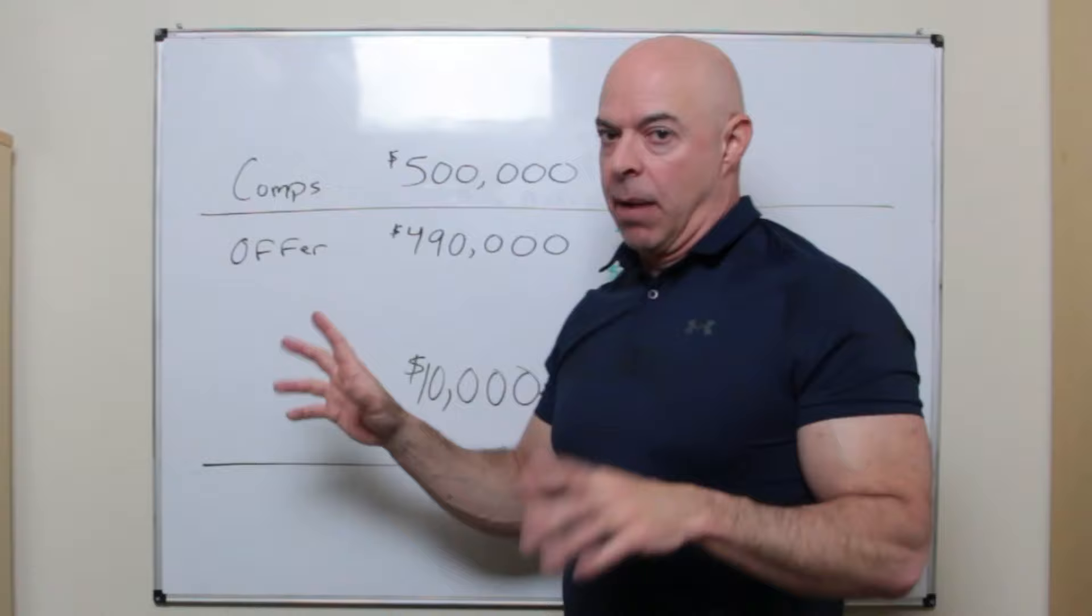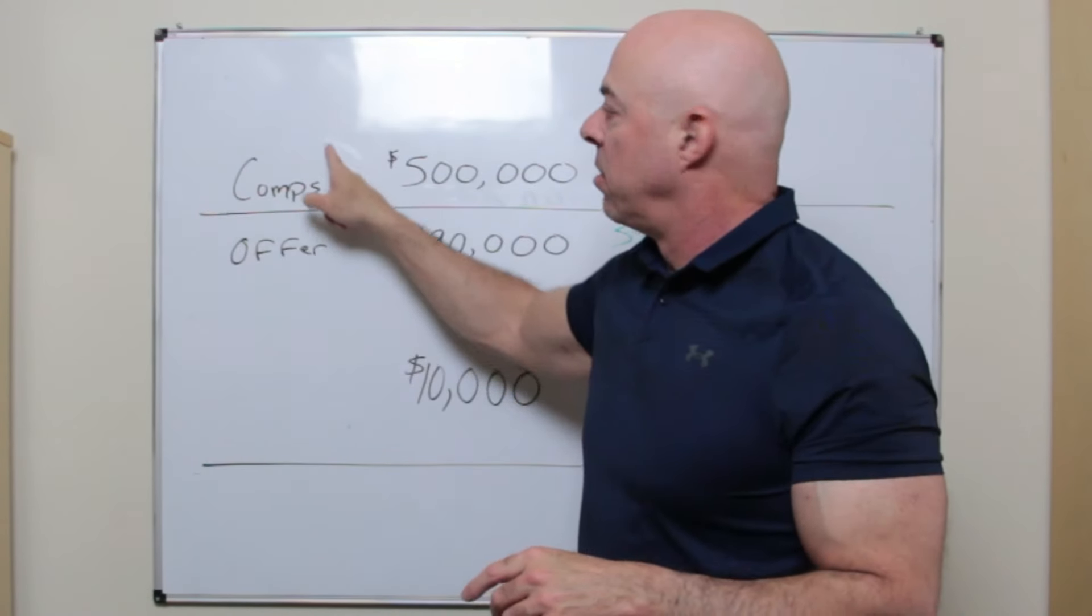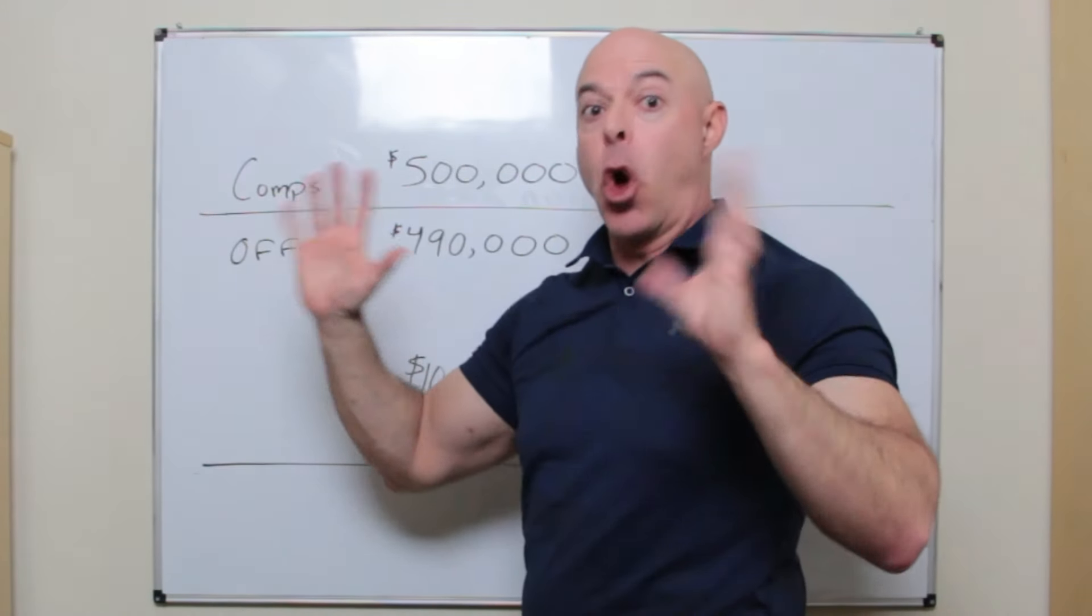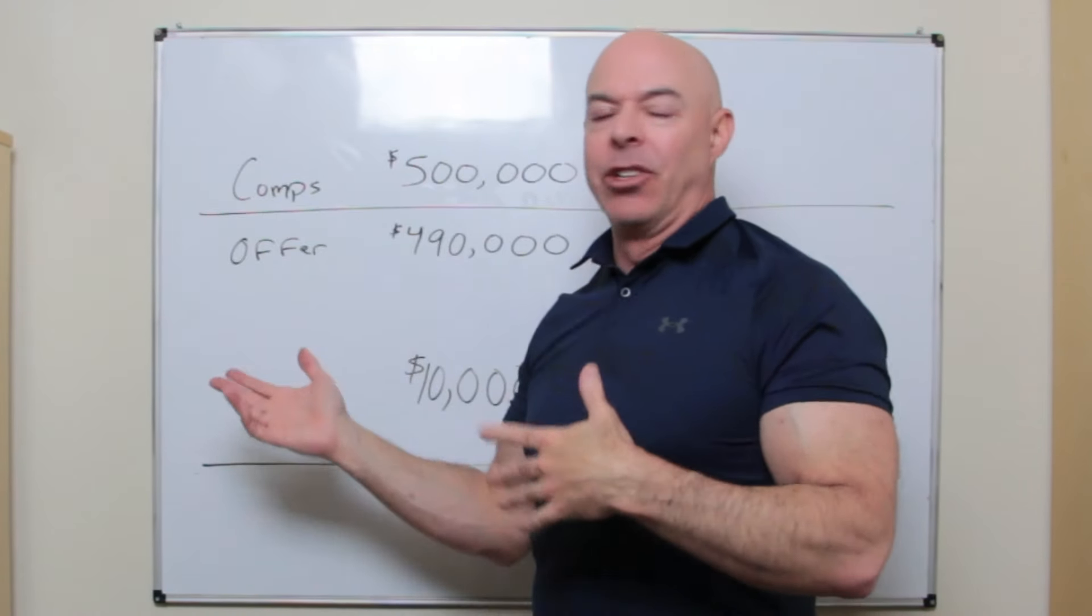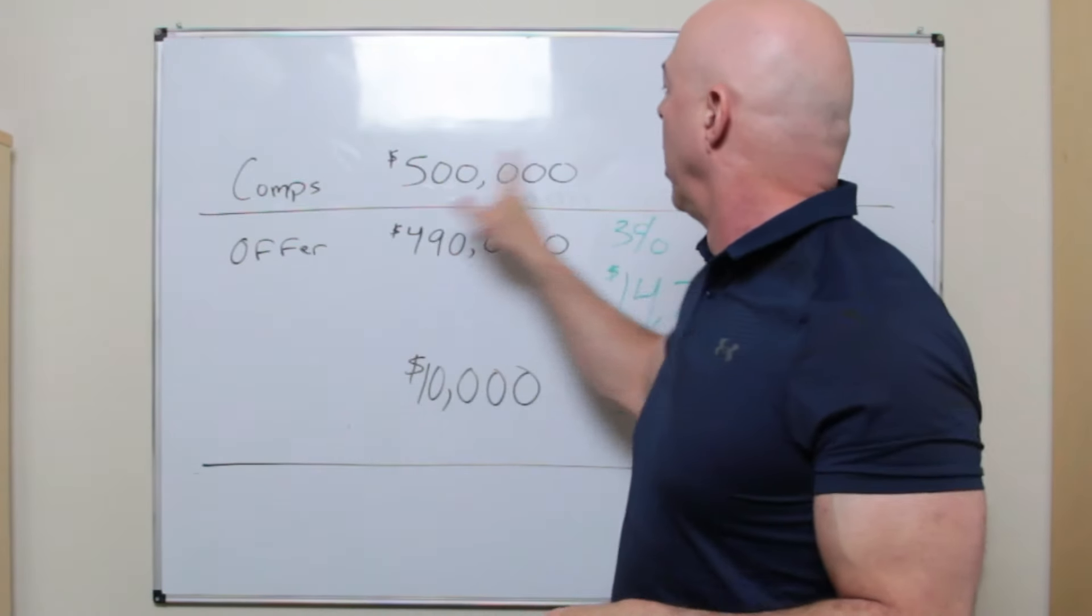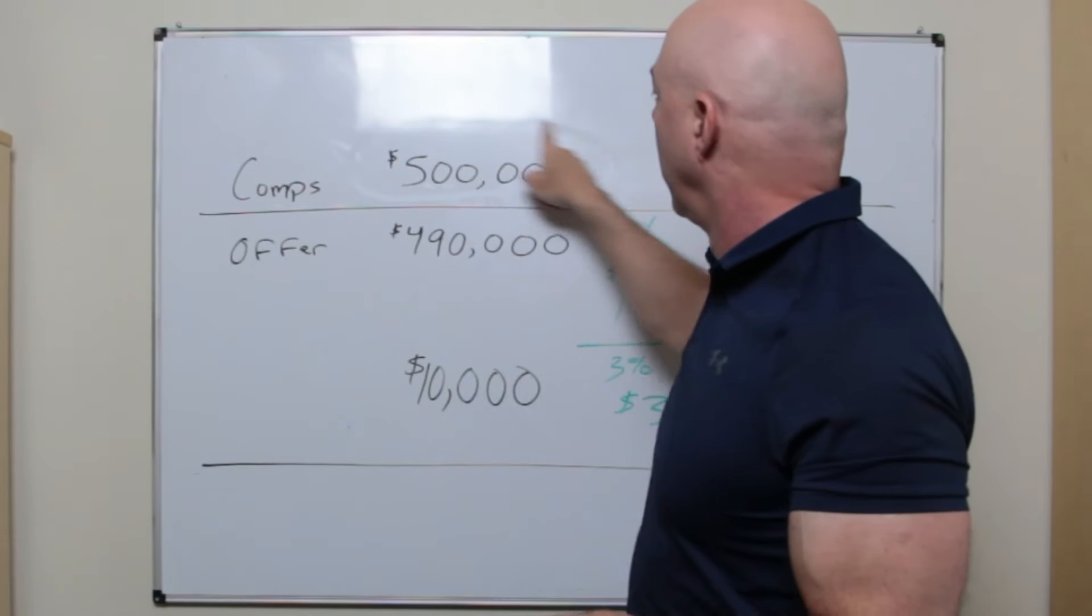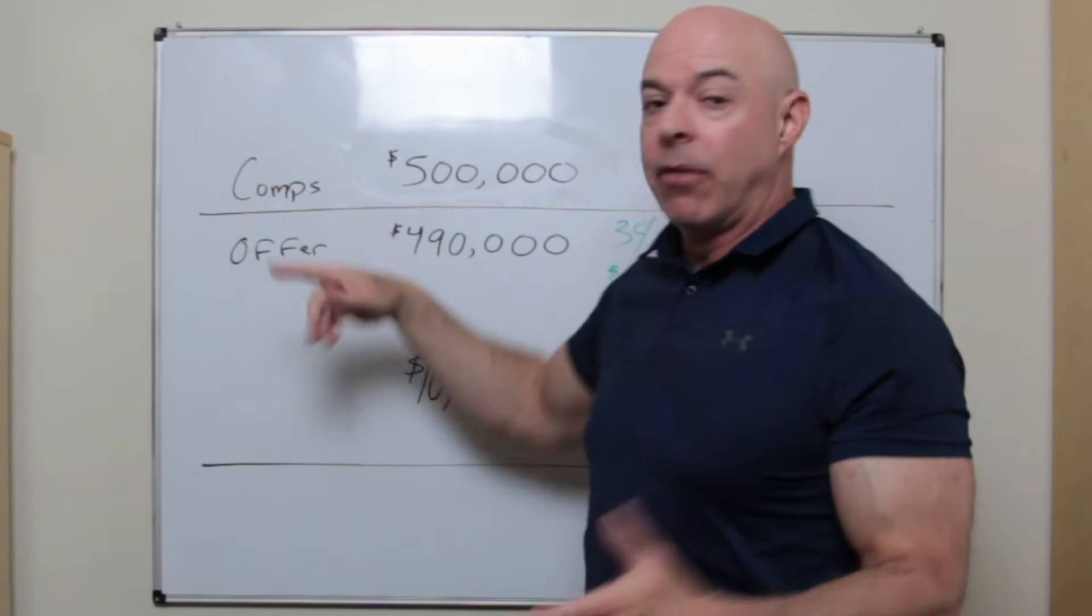Let's say in this example that the comps in your neighborhood, a thousand homes in the neighborhood, all fairly similar, beds, bath, the yard, all that stuff. Comps are close, about $500,000. And recently they've been selling for $500,000.